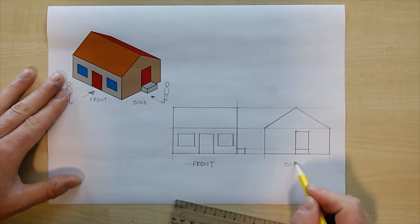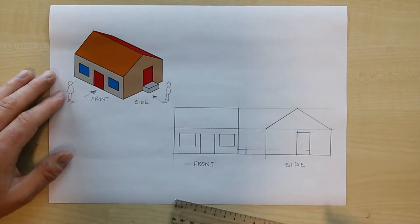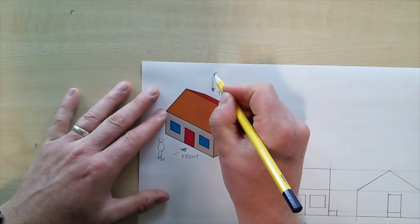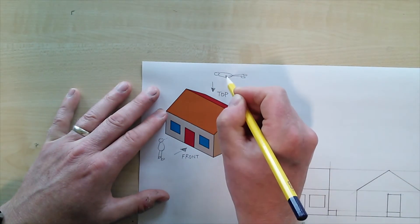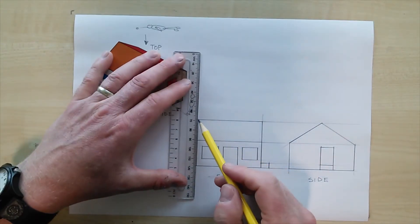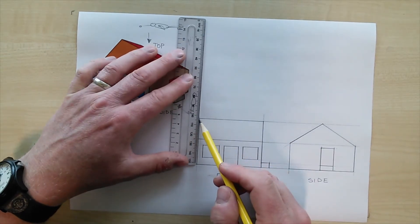And finally the third and final view we need for this simple orthographic is a top view and for this I want you to imagine yourself flying above the house looking down on it, imagine yourself as a superhero or as a seagull or something like that.